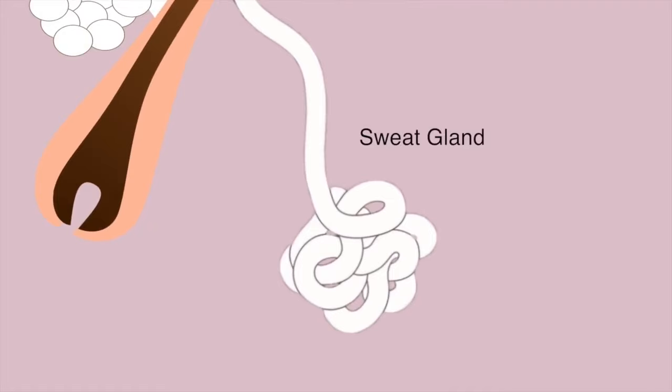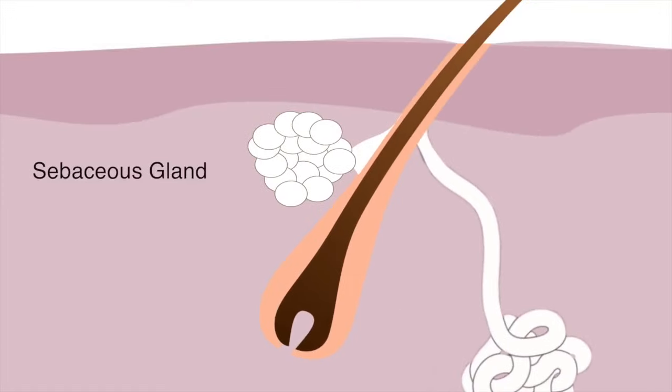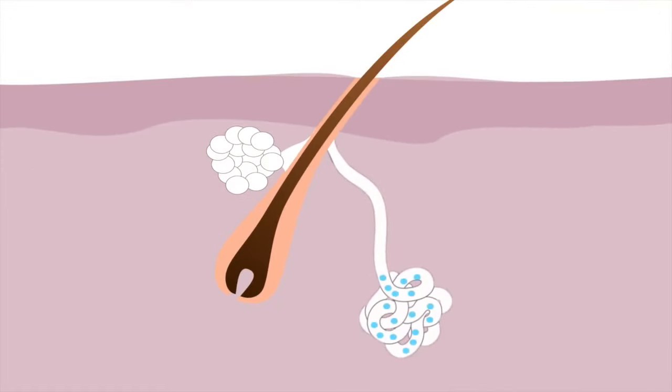There are two major glands. One is the sweat gland and the other is the sebaceous gland. The big difference is that the sweat glands produce water-based sweat. Sebaceous glands produce fat-based lipid acid.